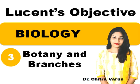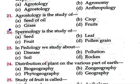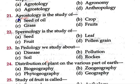Good morning everyone. Here we are discussing our new series of Lucent's Objective Biology section, and our topic of discussion would be botany and its branches. Question number 21: Agrostology is the study of — option A seed of oil, option B crop, option C grass, option D fruits. The word 'agrost' comes from the Greek word 'agrostis', which means a type of grass, and 'logi' means study. So agrostology means study of grass — option C is correct.